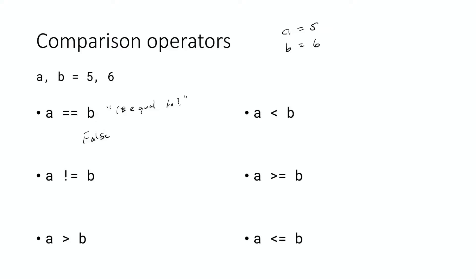The next operator, exclamation point equals (!=), means 'not equal to' — it's the exact opposite of ==. So a != b would be true here, because a is 5 and b is 6, and 5 is not equal to 6.